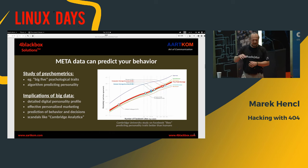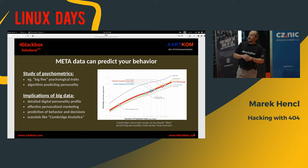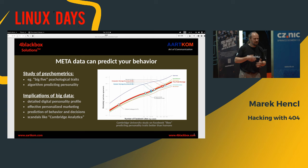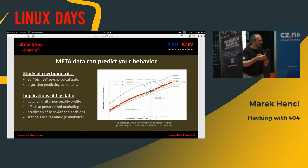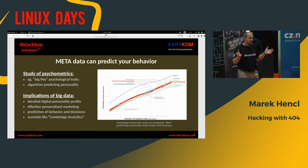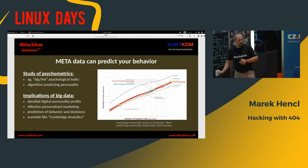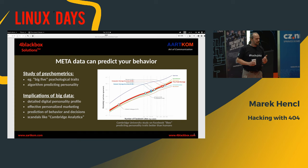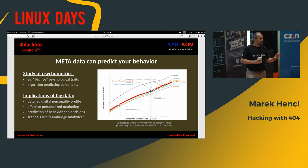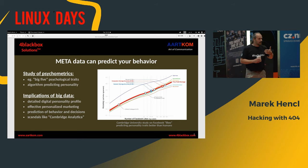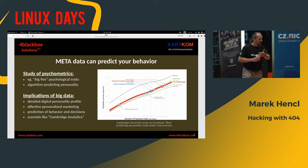If we take it one level down and look at big data — for example, Facebook — based on how many clicks you do, they can tell if you're gay or not, so on and so forth. There was a good study by Cambridge University that examined psychometrics — the measure of top personality traits — basically projecting how you will behave in certain situations.